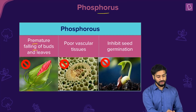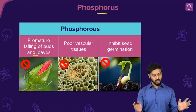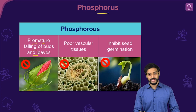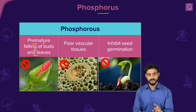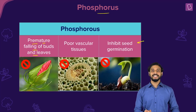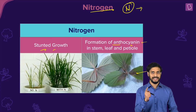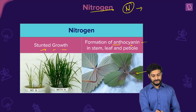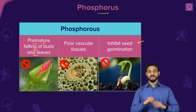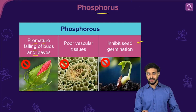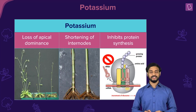For phosphorus deficiency, the symptoms are: premature falling of buds and leaves, vascular tissues do not develop properly, and seed germination is inhibited. So to recap: nitrogen causes stunted growth and anthocyanin formation leading to darkening; phosphorus causes premature falling of leaves, improper vascular tissue development, and inhibited seed germination.